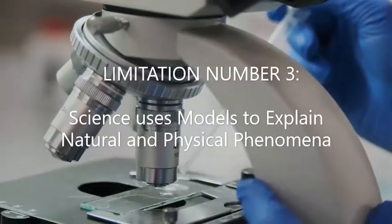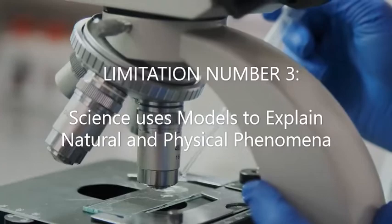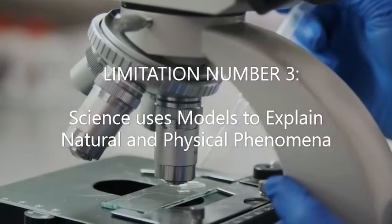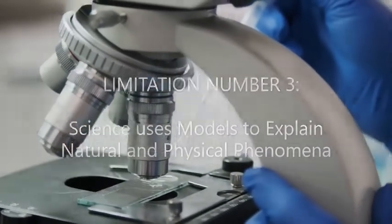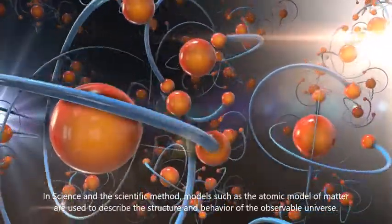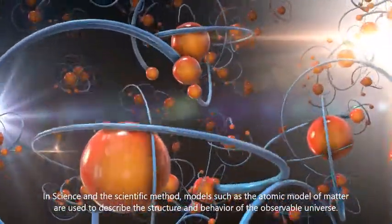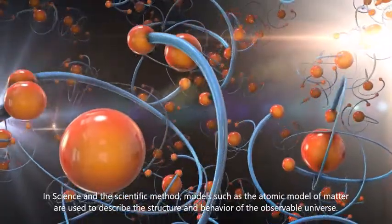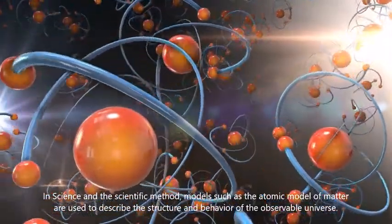Limitation Number 3: Science uses models to explain natural and physical phenomena. In science and the scientific method, models such as the atomic model of matter are used to describe the structure and behavior of the observable universe.